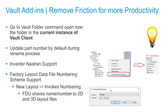In Vault 2020 we have also added Inventor Nastran support, which we will cover later, as well as factory design numbering scheme support to enable factory design utilities to share the name or number across 2D and 3D layouts.